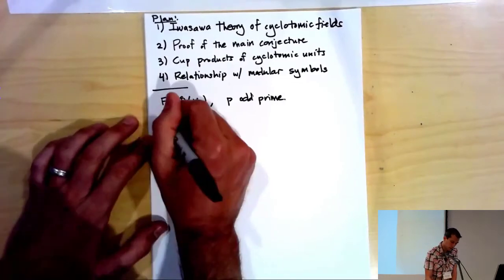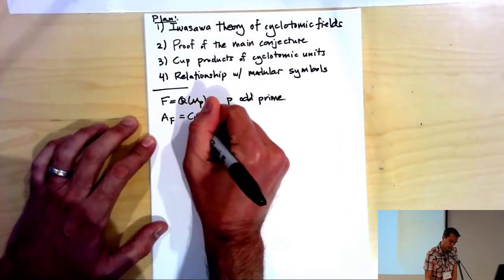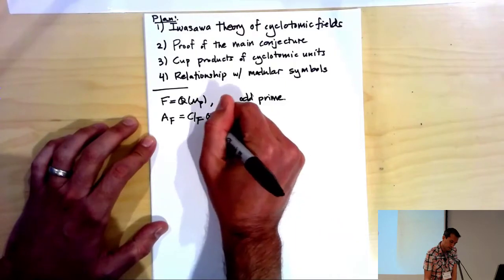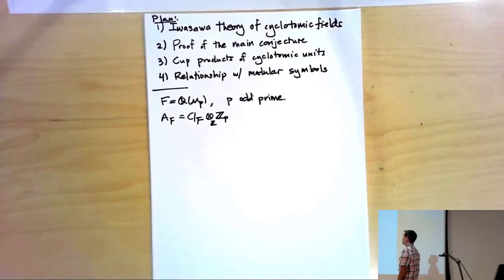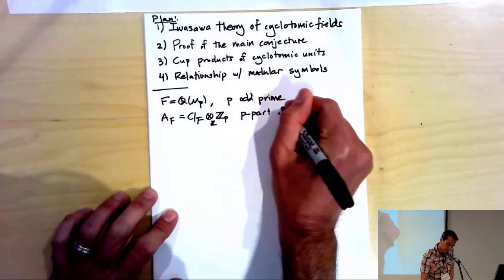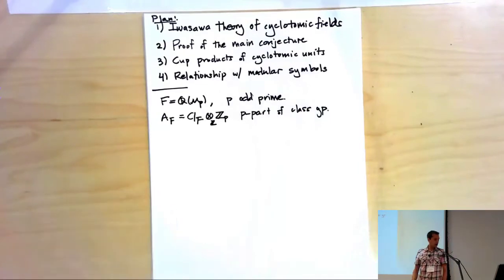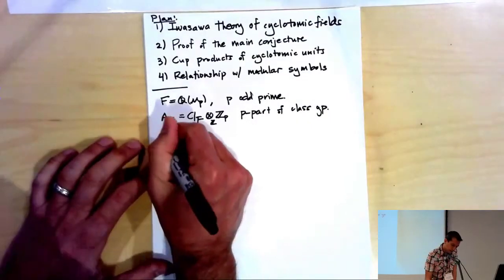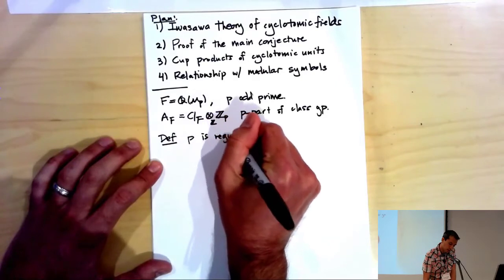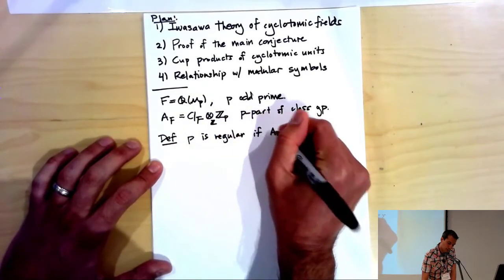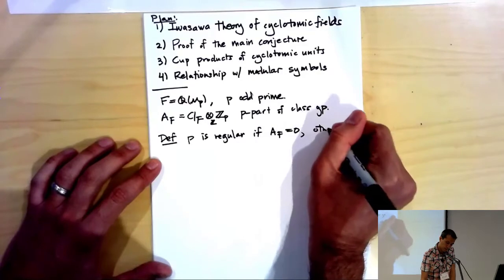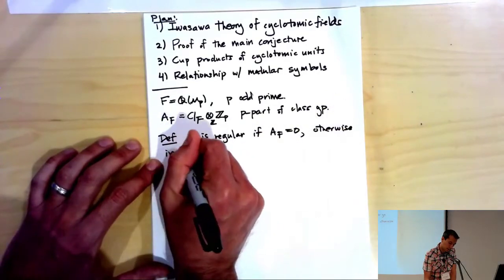The object we're interested in is the P-part of the class group of F, which you can think of as the class group tensored with Z_P. That gives the P-Sylow subgroup. A prime is called regular if P doesn't divide the class number, meaning the P-part of the class group is zero; otherwise we say it's irregular.